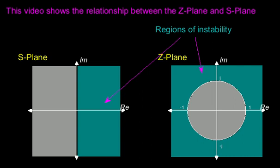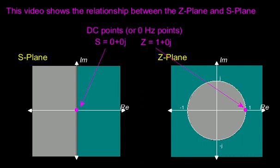Every point in both planes is associated with an oscillating frequency and exponential growth or decay. The DC points shown are associated with 0 Hz and 0 growth or decay, in other words, just a constant value.